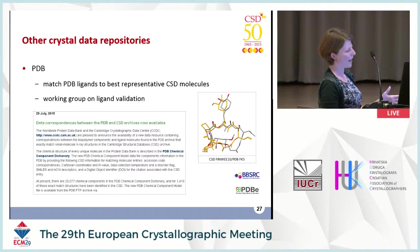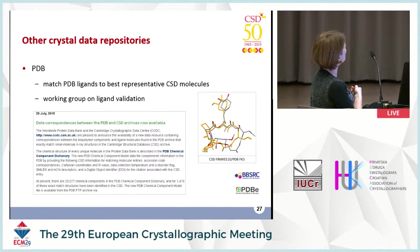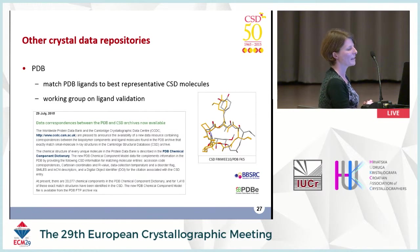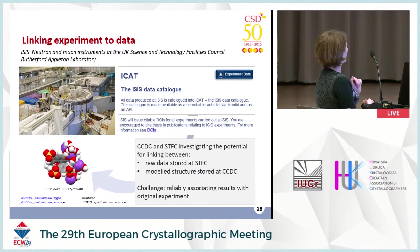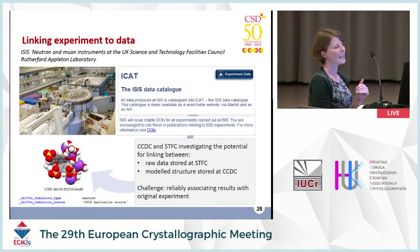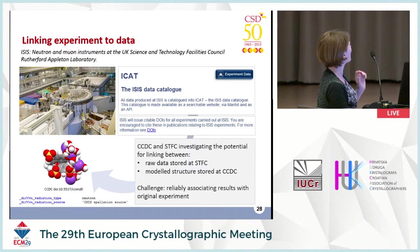We can also link between crystallographic databases. We've been working with the PDB to match PDB ligands to best representative CSD molecules. Of the 20,000 chemical components in the PDB Chemical Component Dictionary, there are about 1,500 exact matches for structures in the CSD, and PDB users can now link between the two. We also investigated linking the raw data stored at STFC with the model structures stored at CCDC, looking at publication DOIs in both systems and metadata in CIFs. We found some matches but need a more systematic approach to link raw data and model structures in the future.